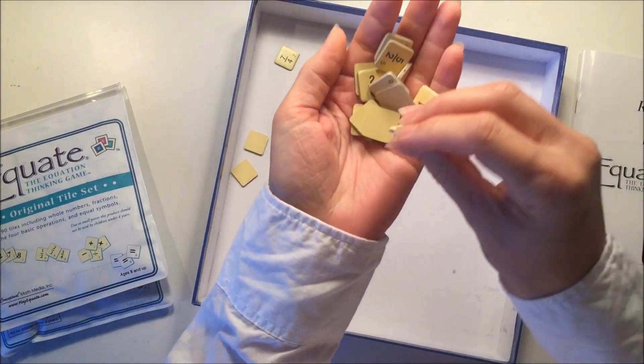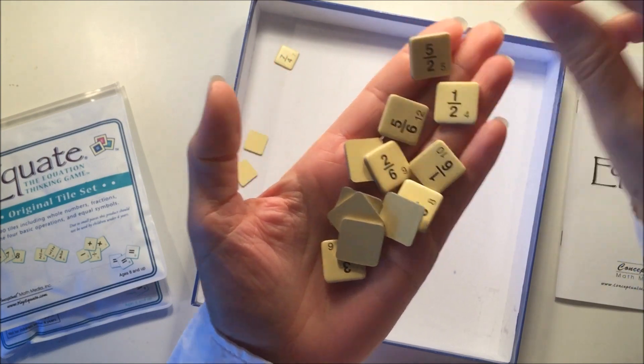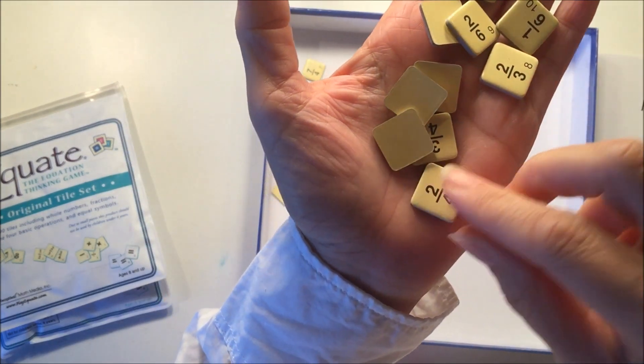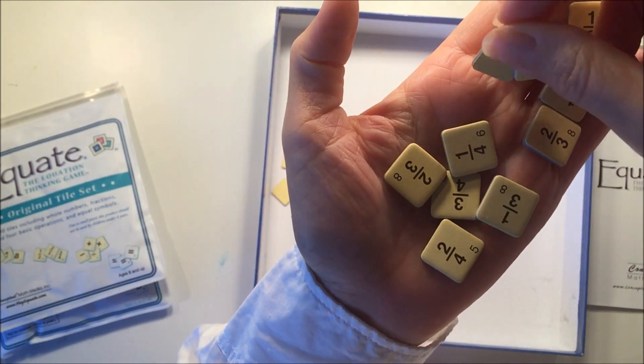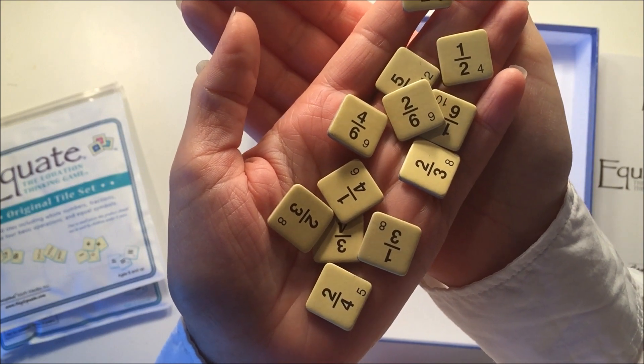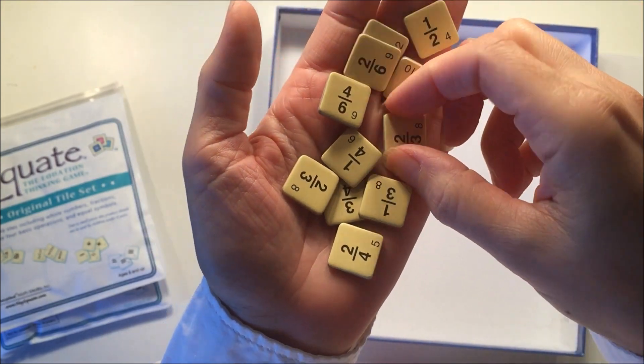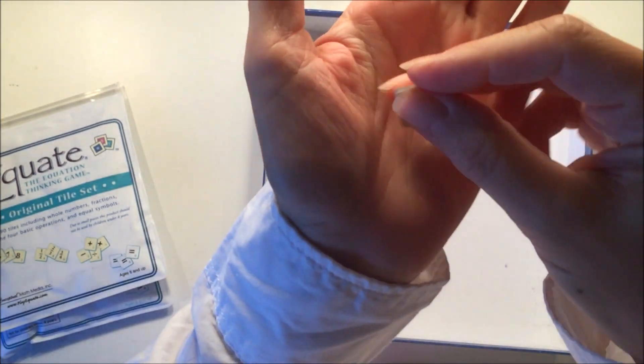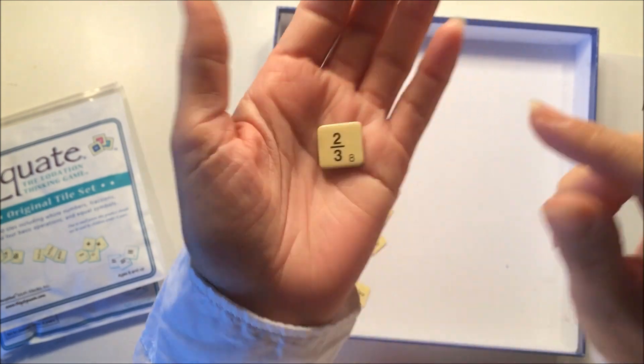I'm going to show you some of these fraction tiles that we removed from the original set. On the little tile piece there will be the number or in this case the fraction, and in the bottom right corner there's a little number between 0 and I think 10 that indicates the score for that tile. This one is 2 thirds and the score for this tile is 8.